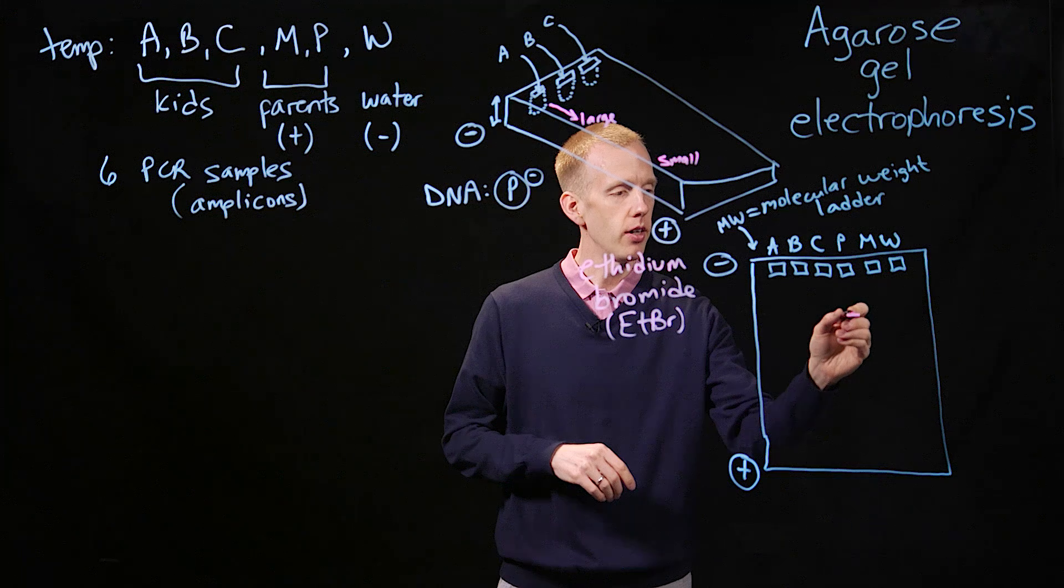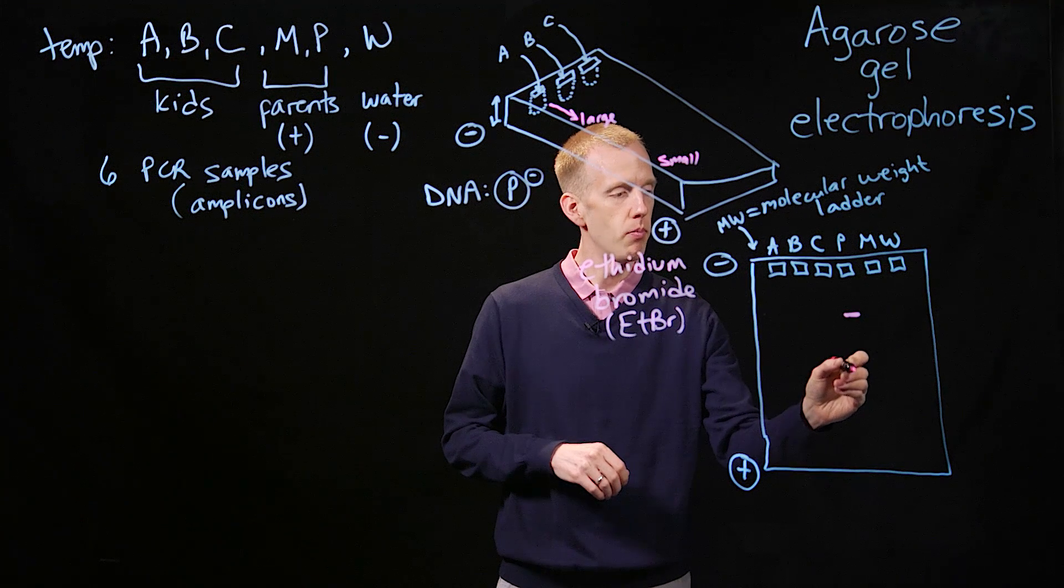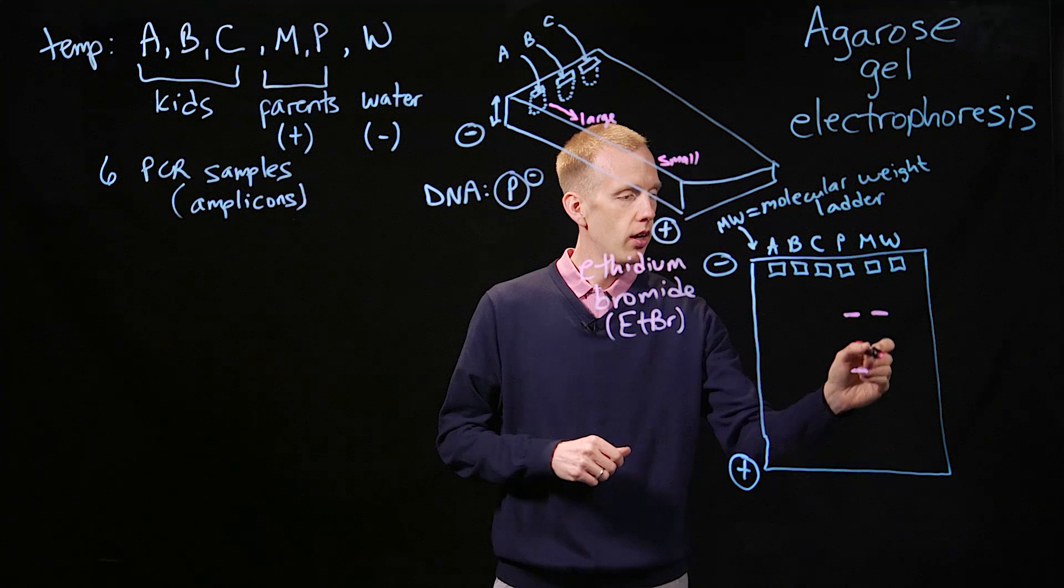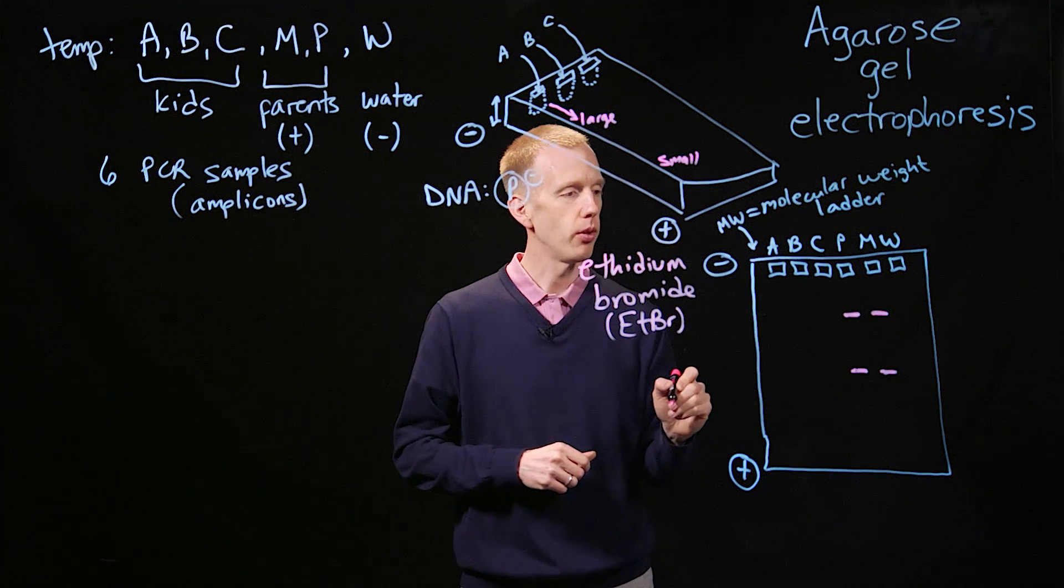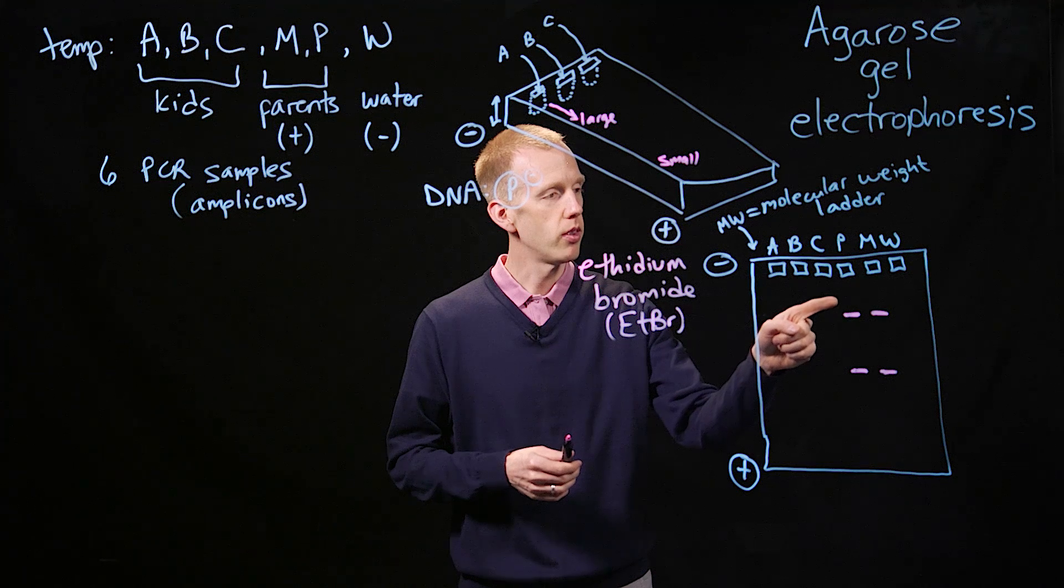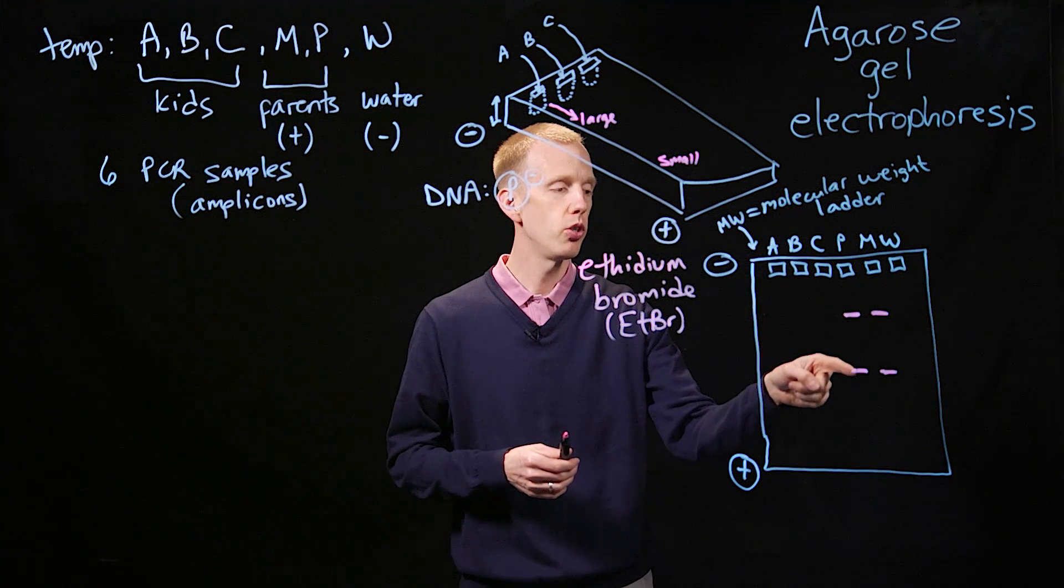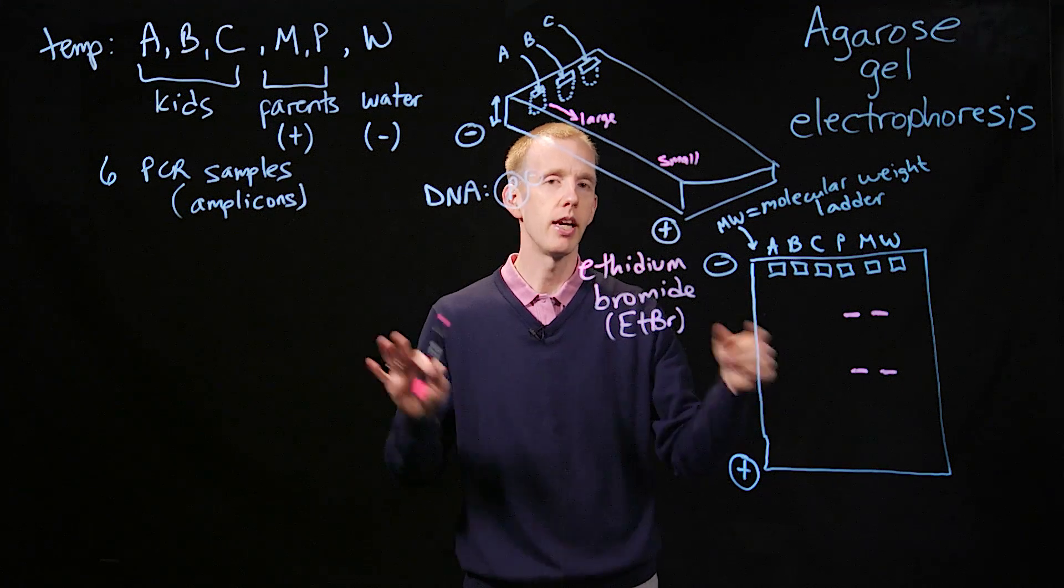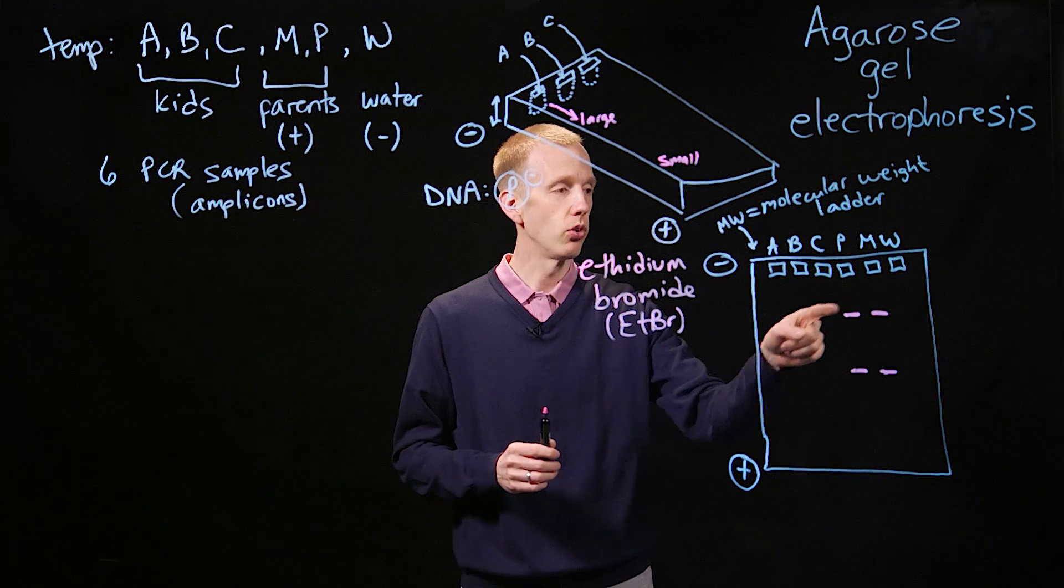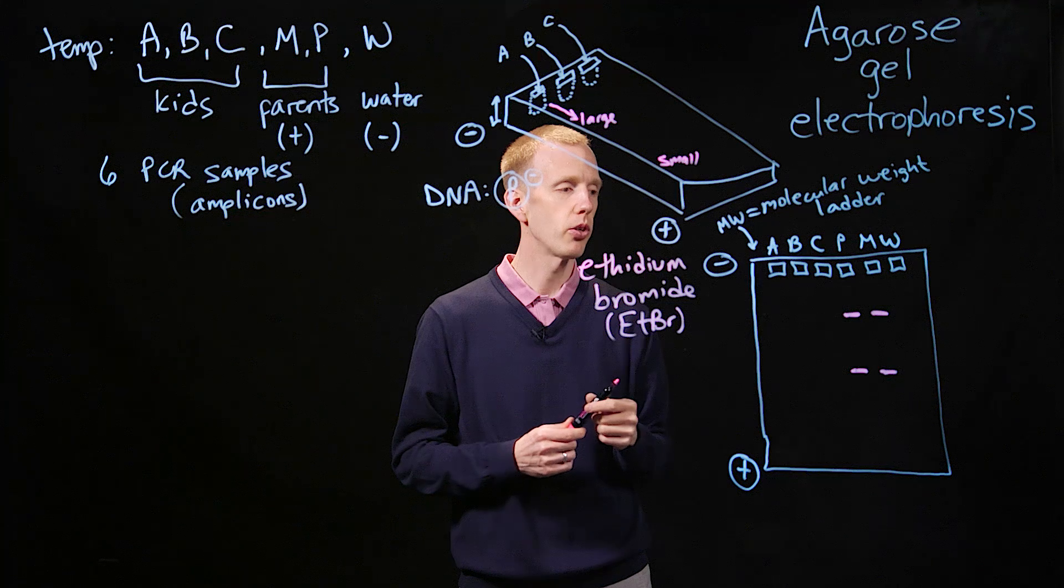And for example, what we might see here is that there are lines, which we call bands, from every sample. And what these indicate, for example, is the paternal DNA sample has produced two different sized pieces of DNA as a result from PCR amplification. And it looks like the same is true from the maternal sample.